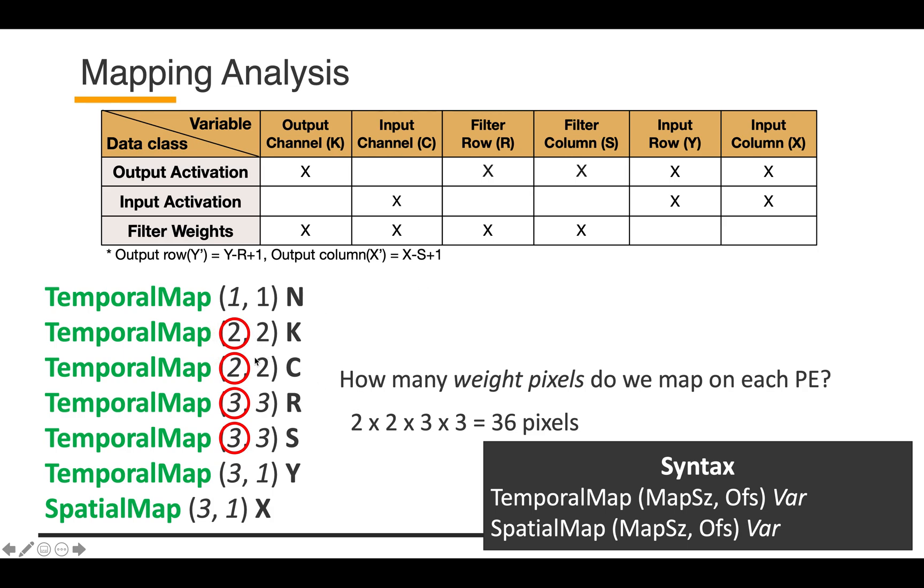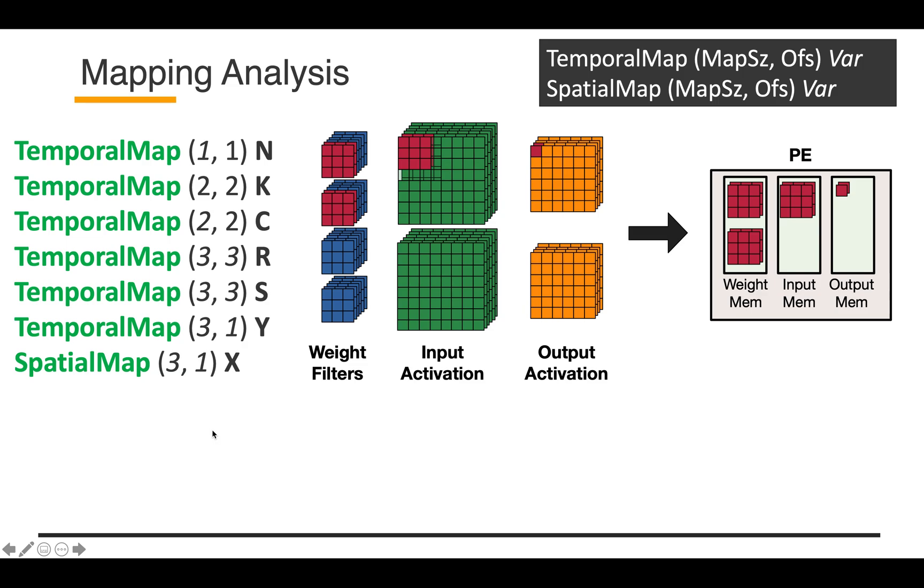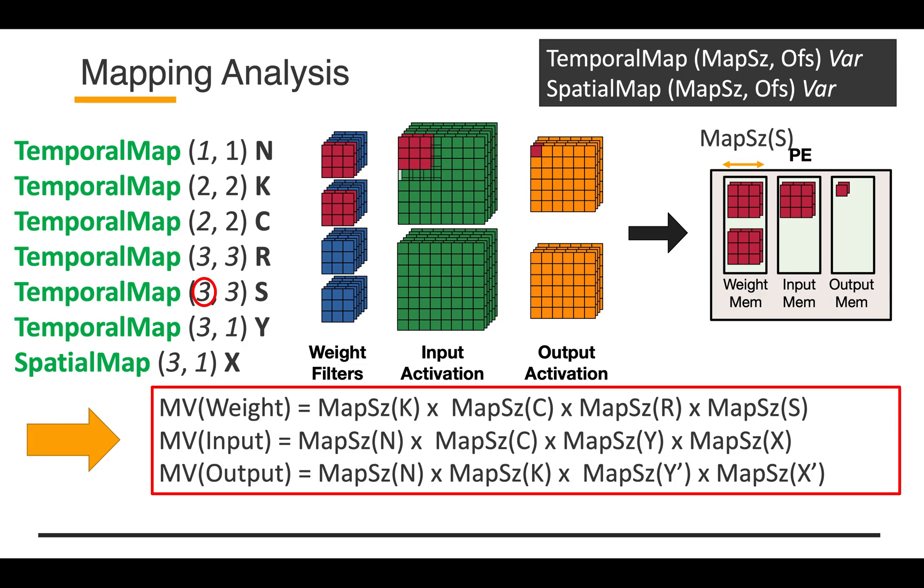The weight tensor is a four dimensional tensor, so they have K, C, R, and S dimensions. What we are doing is we are getting the sub volume of the entire filter tensor, which is the filter tile. Similarly, we can compute the mapping volume, which is the tile size of each tensor in this way. What we need to do is just multiply the mapping size of the coupled data dimensions.